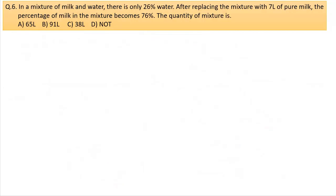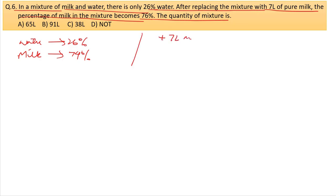Question 6: In a mixture of milk and water, there is only 26% water. After replacing the mixture with 7 liters of pure milk, the percentage of milk in the mixture becomes 76%. What is the quantity of mixture? Initially, there's 26% water, so milk is 74%.